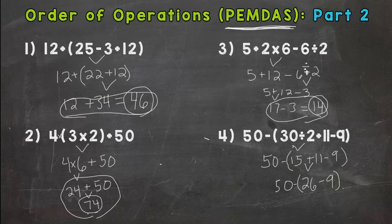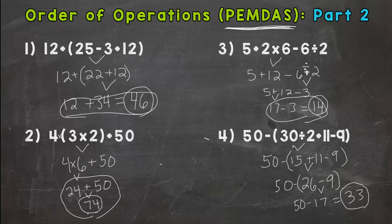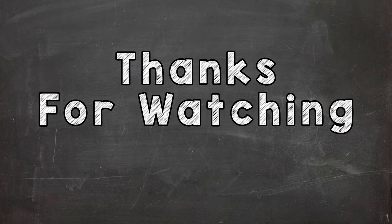26 minus 9 within the parentheses gives us 17. Drop the 50 and the subtraction sign, so we end with 50 minus 17, which gives us 33. That's Order of Operations Part 2! I hope you're ready to try some on your own — I dropped the link to the mastery check below. I will see you over there. Thanks for watching!